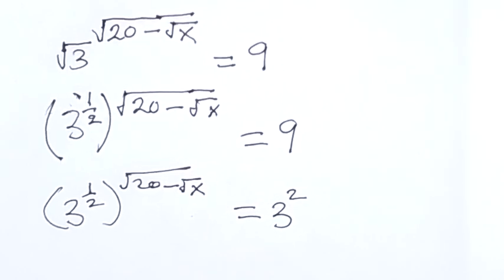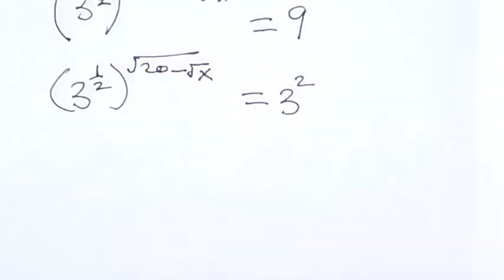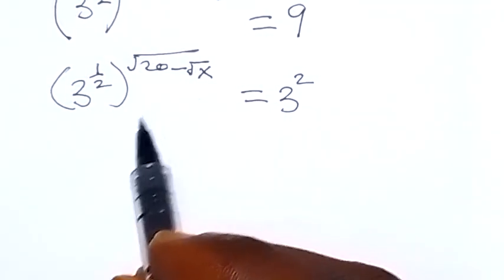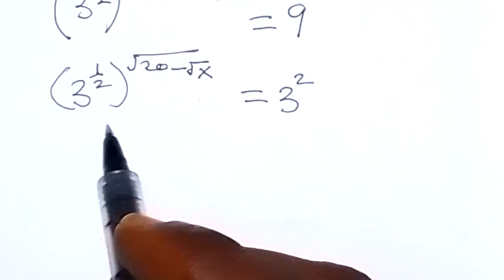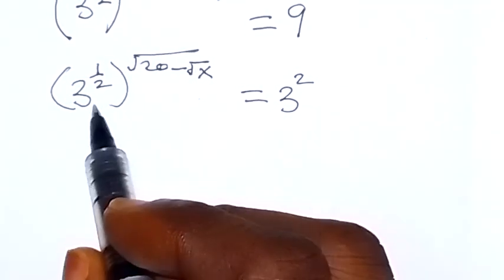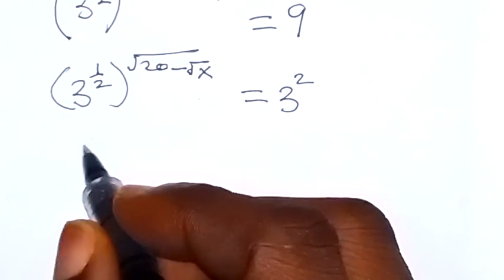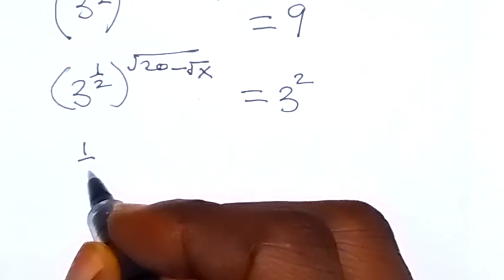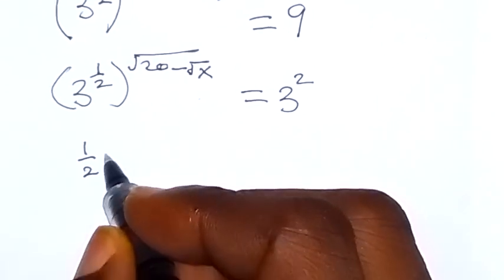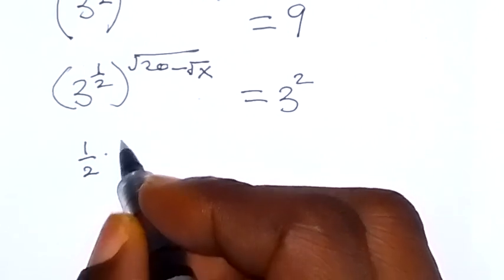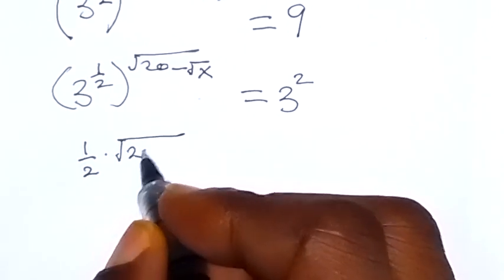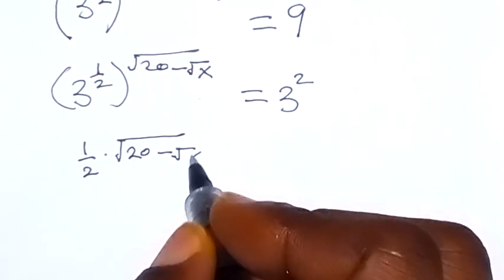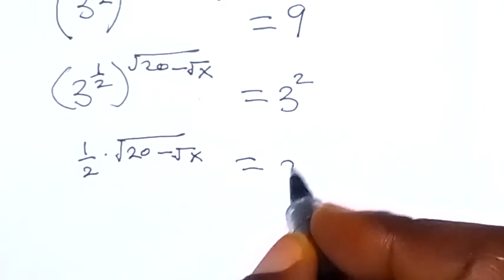Now from here we have the same base, so we can drop the base and equate the powers. We have half multiplied by root 20 minus root x, which will then be equals to 2.